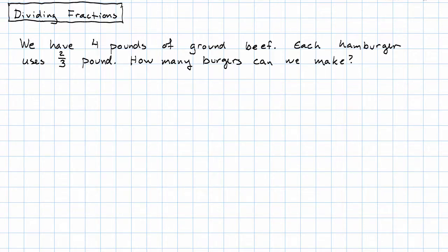So that gives us four pounds divided by two thirds of a pound per burger. We want to know how many burgers we can make.